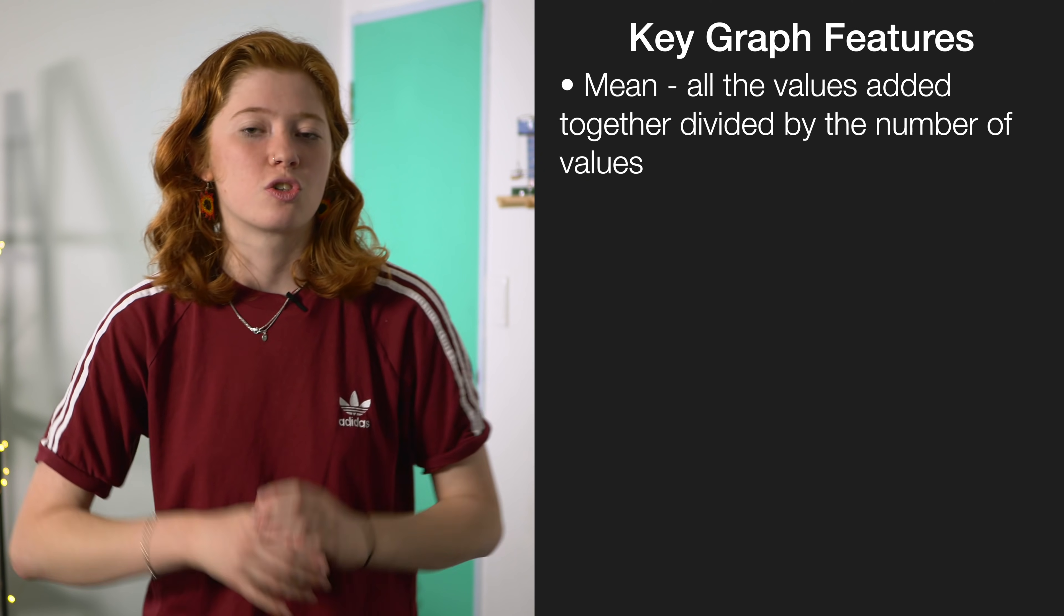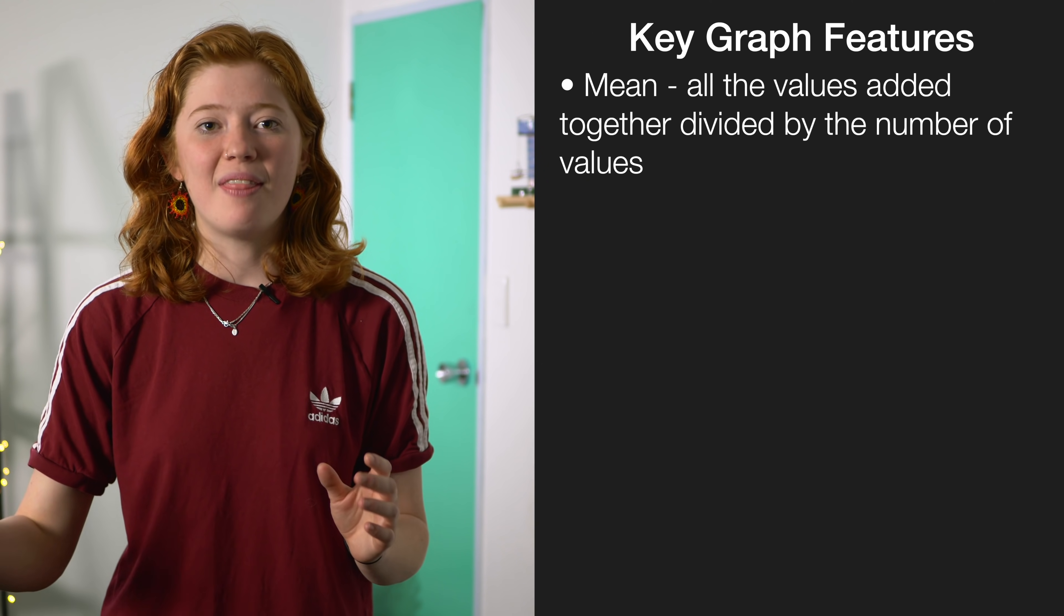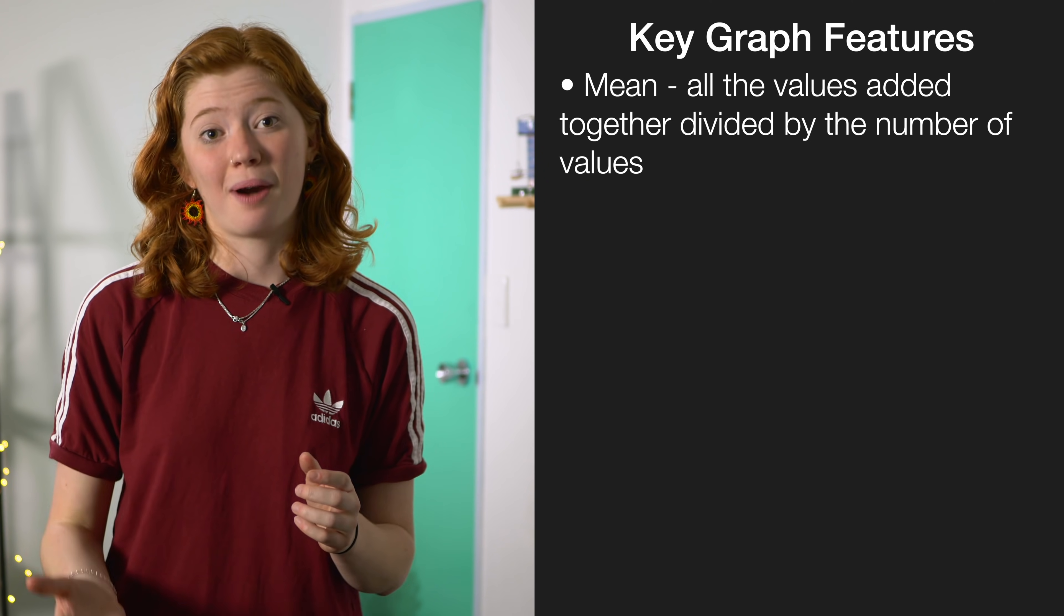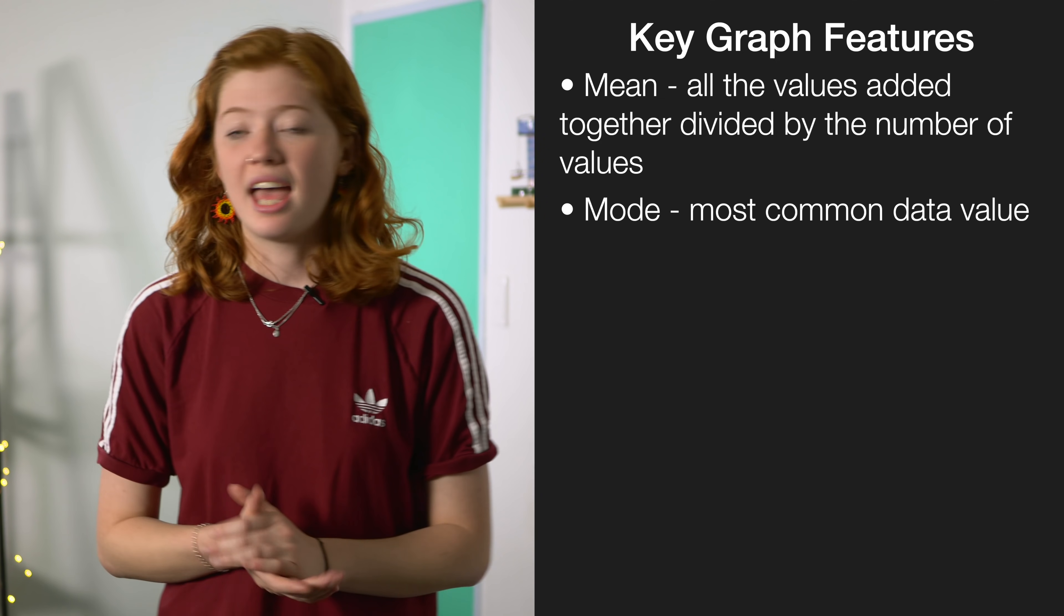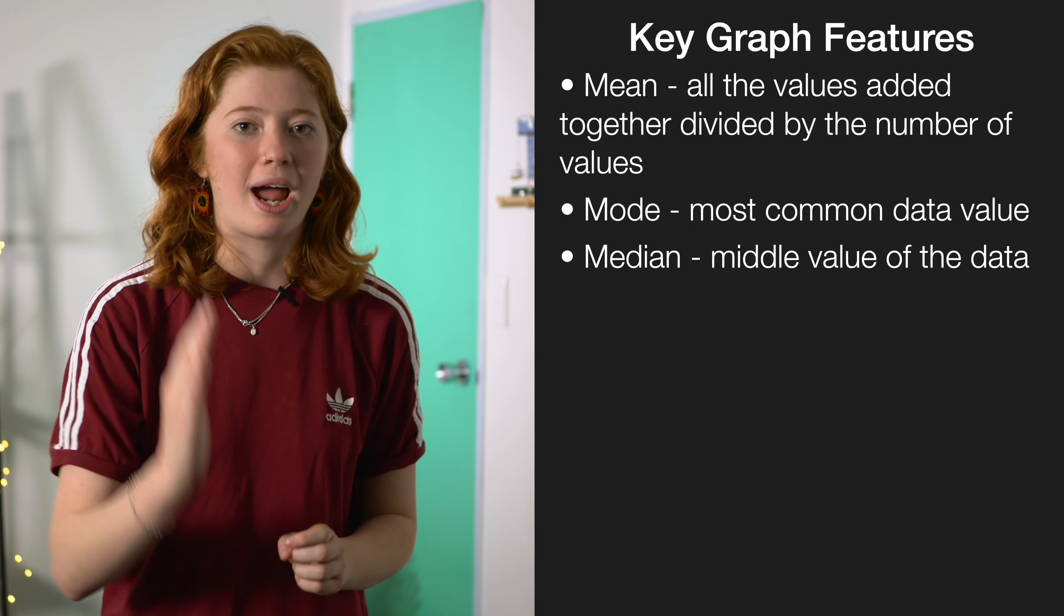The first one is the mean. The mean is just all of the numbers added together and then divided by the number of numbers that there are. Next you need to look at the mode, which is your most common number, and your median, which is the number that falls right in the middle.